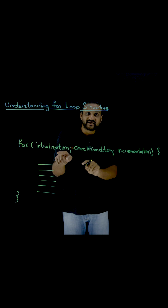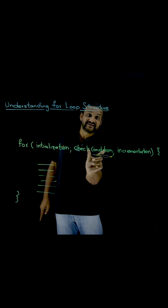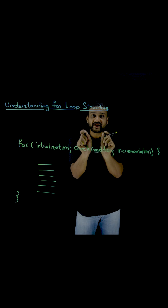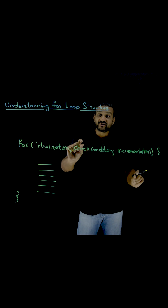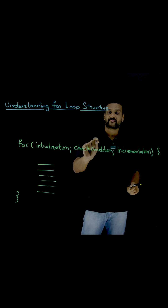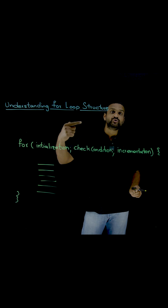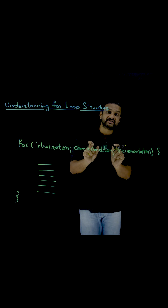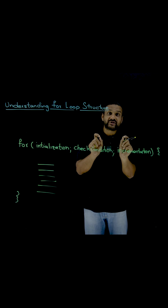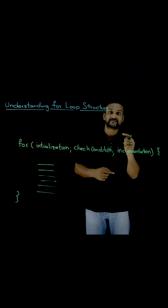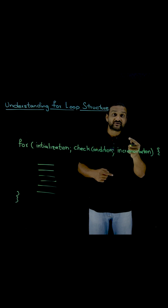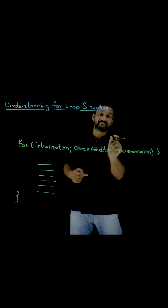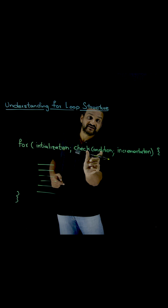Once the initialization is done, we go into the check condition statement. This condition is the very important part of the entire for loop because this is where the decision is made. The for loop decides whether to iterate the loop again or not. As the job of these loop structures is to do repetitive work again and again, we need to make a decision whether to enter into the loop again, and that decision is made by the check condition statement.